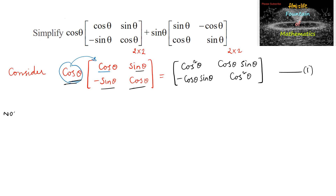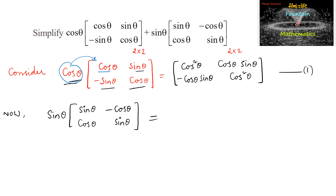Now consider sin θ multiplied by the matrix [sin θ, -cos θ; cos θ, sin θ]. Multiplying sin θ into each element: sin θ × sin θ is sin²θ, sin θ × cos θ is sin θ cos θ, sin θ × cos θ is sin θ cos θ, and sin θ × sin θ is sin²θ. This is matrix 2.